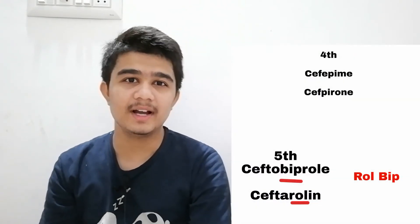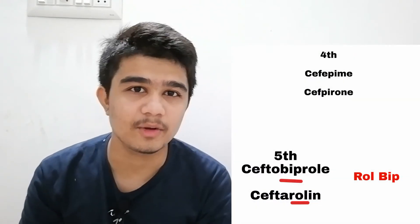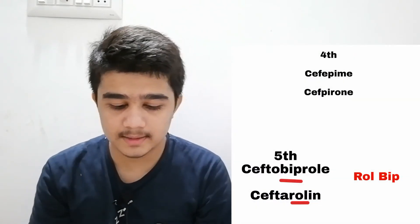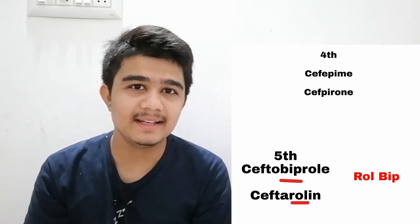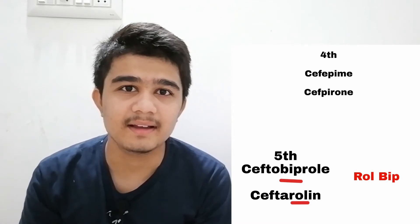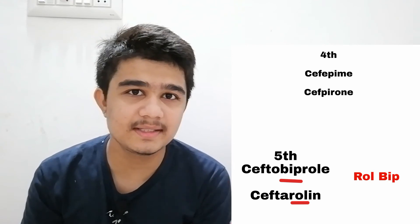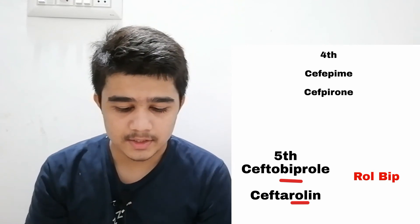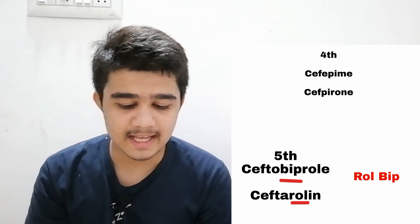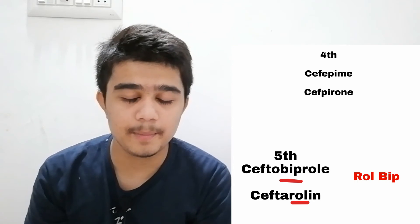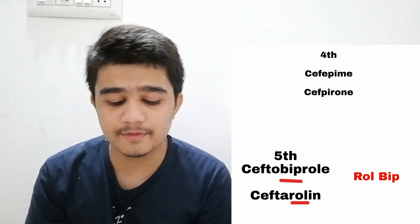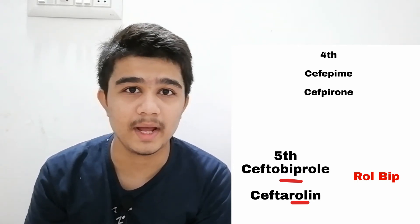For fourth generation cephalosporins, there are only two drugs and they're easy to remember. The trick is that after 'cef' there is a 'PI': the first drug is Cefepime and the second drug is Cefpirome.